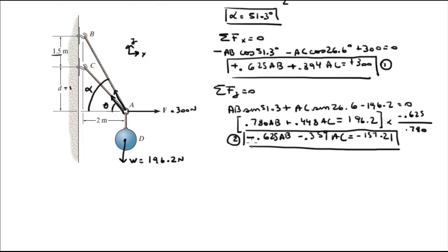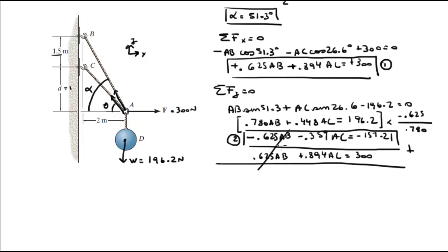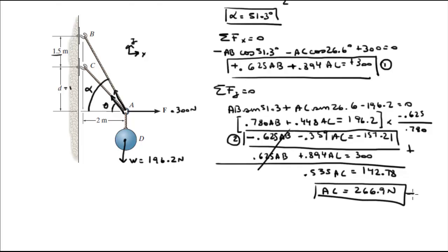I'll rewrite equation 1 right below equation 2: 0.625 AB plus 0.894 AC equals 300. Adding the two equations together, the AB terms cancel out, and I get 0.535 AC equals 142.78. Solving for AC gives AC equals 266.9 Newtons. Plugging that into equation 1 or 2 and solving for AB gives AB equals 98.23 Newtons.